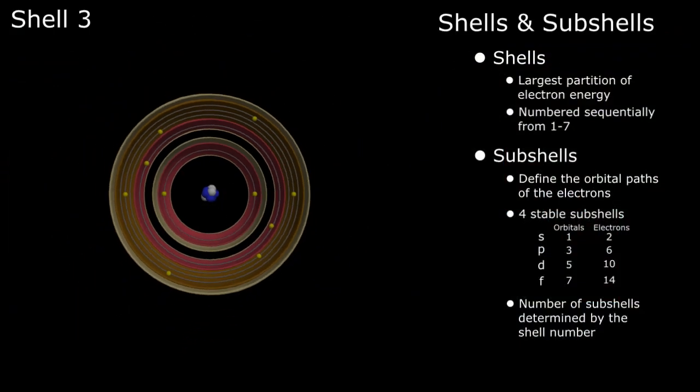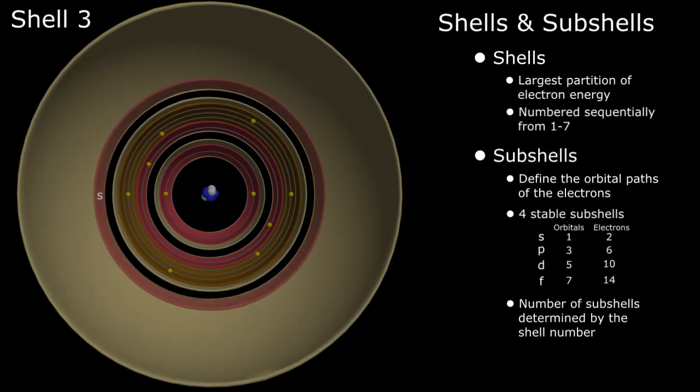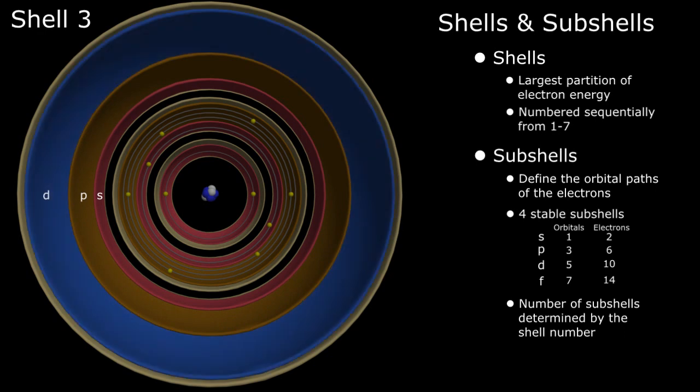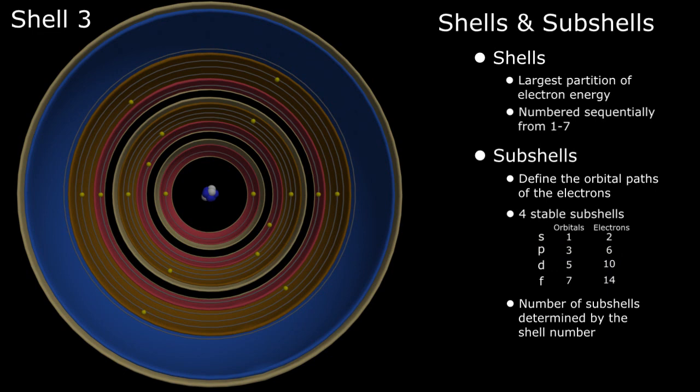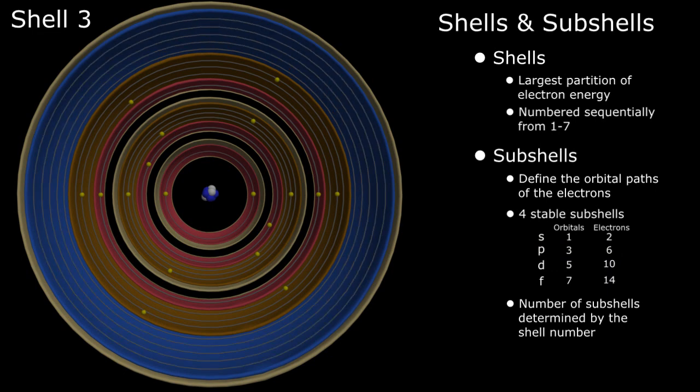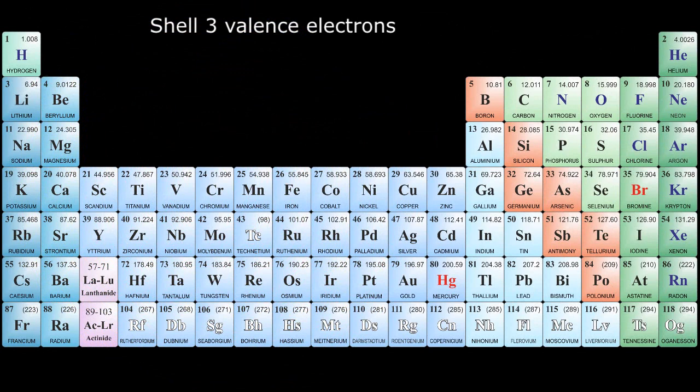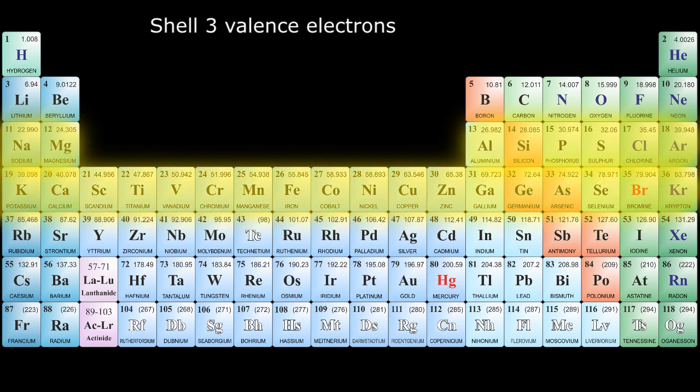Maintaining the pattern, shell 3 contains three subshells, S, P, and D. As before, S contains a single orbital with two electrons. P has three orbitals, each containing two electrons for a maximum total of six. And D has five orbitals, each containing a maximum of two electrons for a max total of ten. Shell 3 is now complete with a total of 18 electrons. Shell 3 completely defines the valence configuration of the third row of elements from sodium to argon and contributes to the valence electrons of the fourth row, from potassium to krypton.